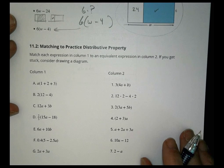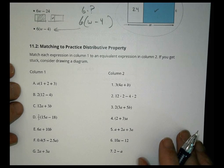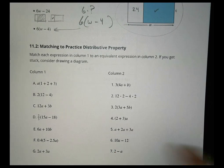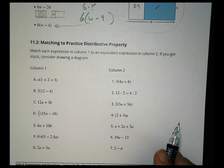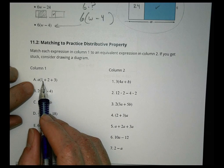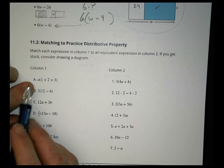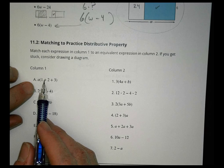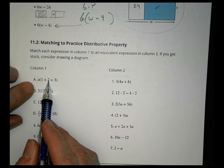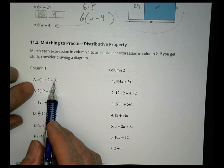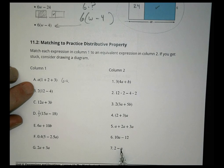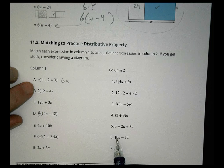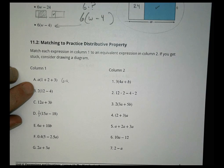This next activity says to match each expression in column 1 to an equivalent expression in column 2. If you get stuck, consider drawing a diagram. In this one, we have a times 1 plus 2 plus 3. These could all be combined. 1 plus 2 is 3 plus 3 is 6, so I could look for something like 6a. I don't really see a 6a anywhere.